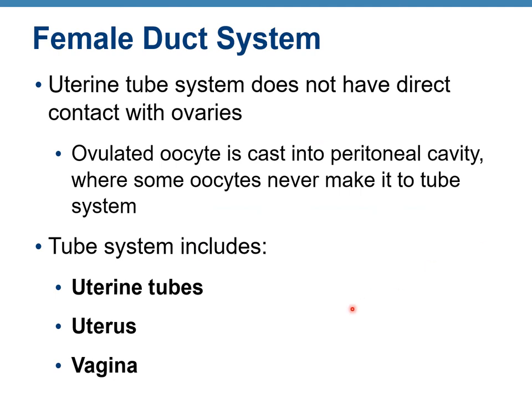The female duct system does not have direct contact with the ovaries. The ovulated oocyte is cast into the peritoneal cavity, and some oocytes never make it into the tube system. The tube system includes uterine tubes, uterus, and vagina.